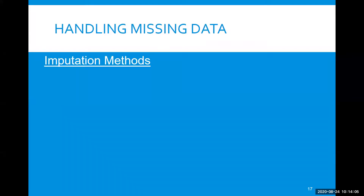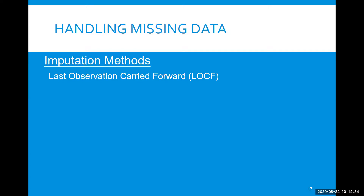I want to talk now about missing data, because missing data is the bane of every researcher's existence. A carefully designed study protocol will take great pains to minimize missing data, but regardless of that, some missing data is often inevitable. There are a number of ways to impute missing data, but nothing is absolutely perfect. Last observation carried forward — or last value carried forward — is when you fill in the last observation as if it were the final value, but that can be quite biased in certain situations.